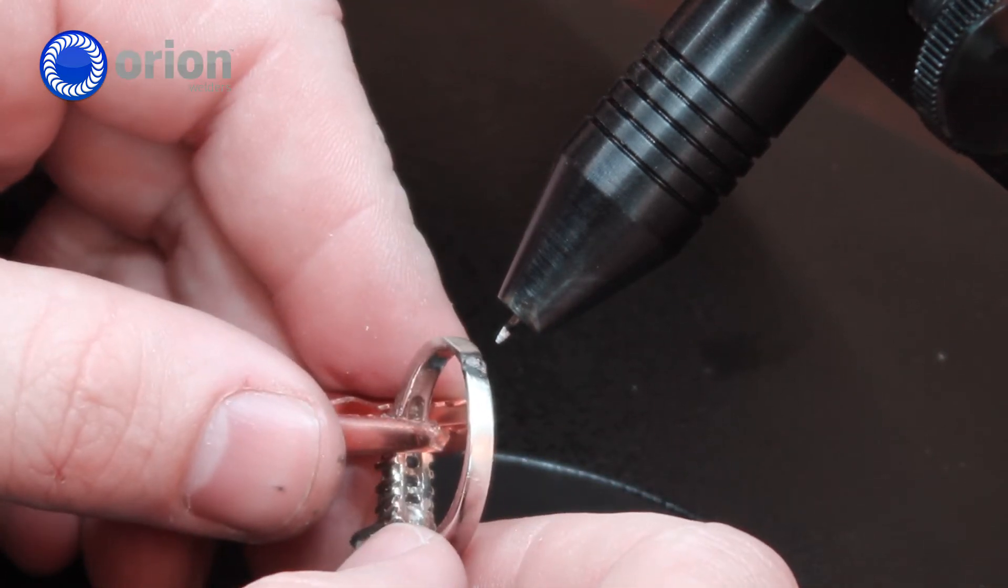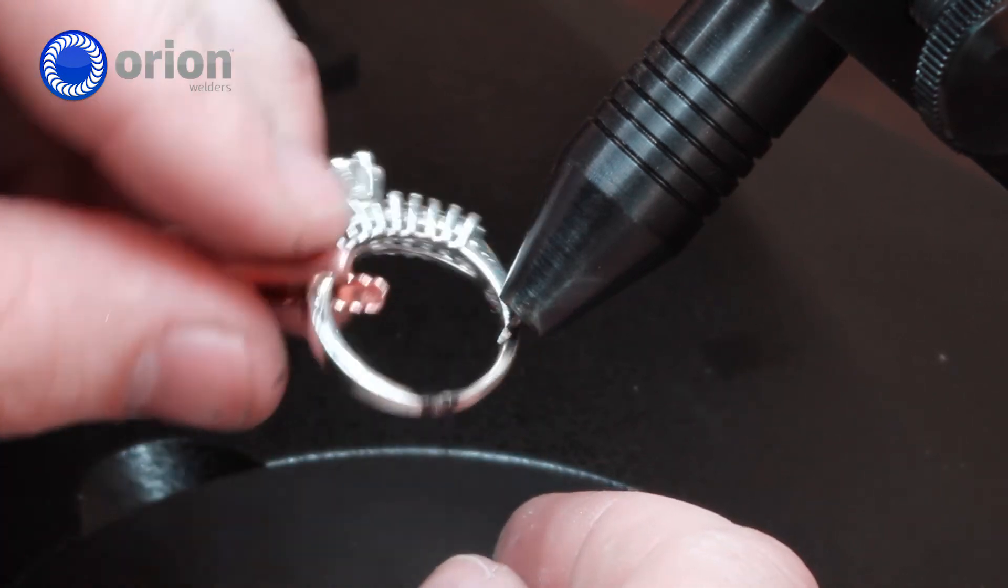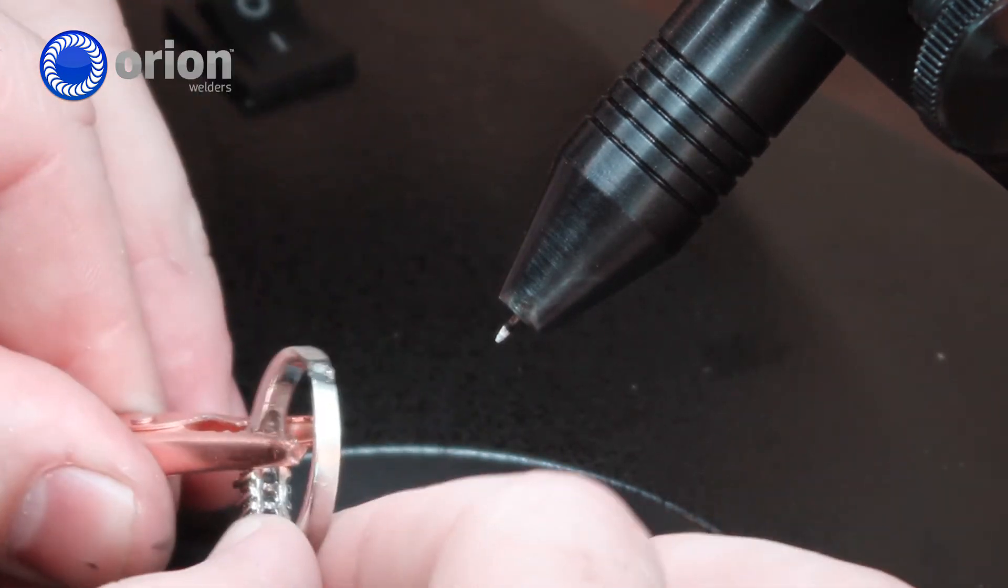Now because we turned the energy up to about 30 watt seconds and then welded from outside and inside, I have a pure weld all the way through that I can give to my customer.